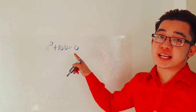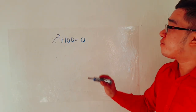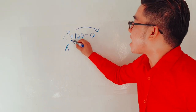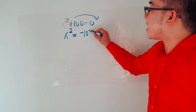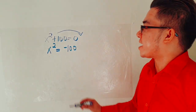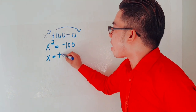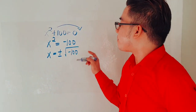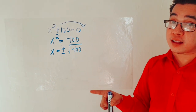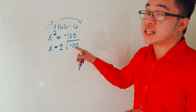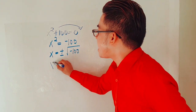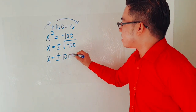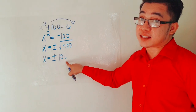For example number 4: x squared plus 100 is equal to 0. The first process is to transpose positive 100 to the other side, so x squared is equal to negative 100 — it changes from positive to negative. So x is equal to positive and negative square root of negative 100. The square root of 100 is 10, but always take note that if we have a negative under the square root, the result is automatically imaginary. So x is equal to positive and negative 10i, where i represents imaginary.